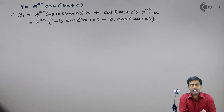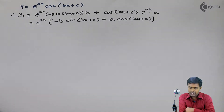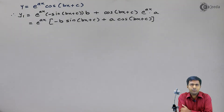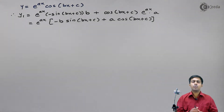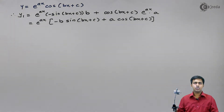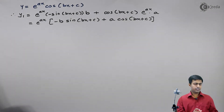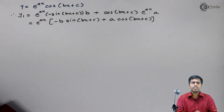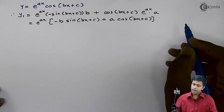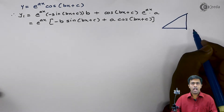Now, if we try to find y2 from this value of y1, we will get more terms in y2, and hence even more terms in further derivatives, making it very difficult to find the nth derivative of the given function. So to find the nth derivative, we will use another method — the method of a triangle. I am drawing a triangle.